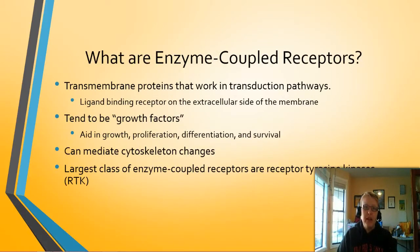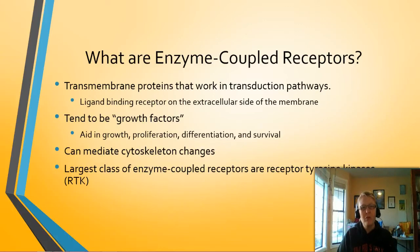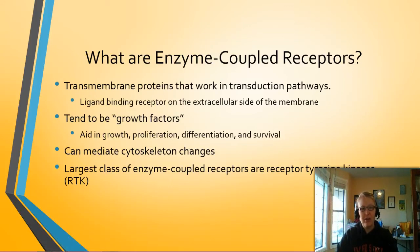So what are enzyme coupled receptors? If you remember when we were talking about lipid membranes, I showed you that video from Amgen where everything was moving around — those big proteins moving around were enzyme coupled receptors. They are transmembrane proteins that work in transduction pathways. As opposed to GPCRs which have seven pass-throughs, enzyme coupled receptors tend to have only one, which means they typically form a dimer when they bind to their signal. These receptors tend to be growth factors involved in growth, proliferation, differentiation, and survival, making them huge targets in cancer pathways — because if a growth factor gets out of control, you end up with a tumor. They also mediate cytoskeleton changes, and the biggest class are known as receptor tyrosine kinases, or RTKs.